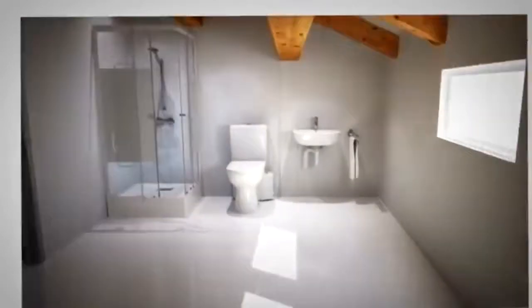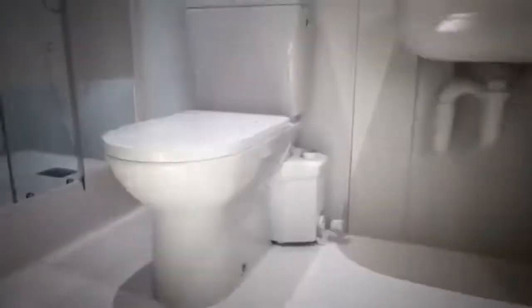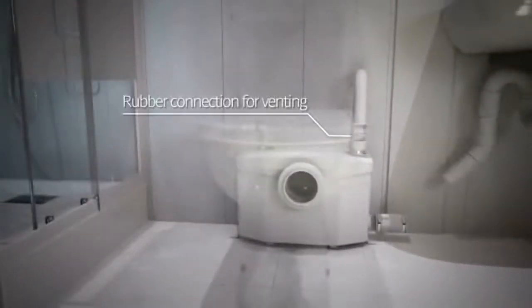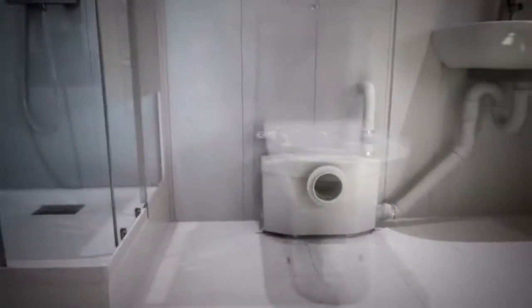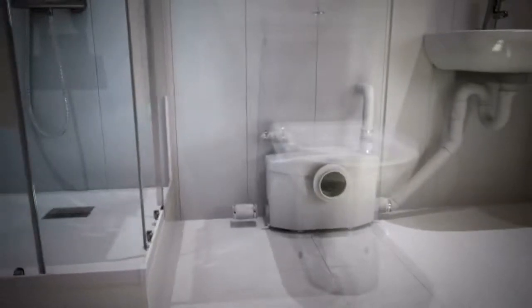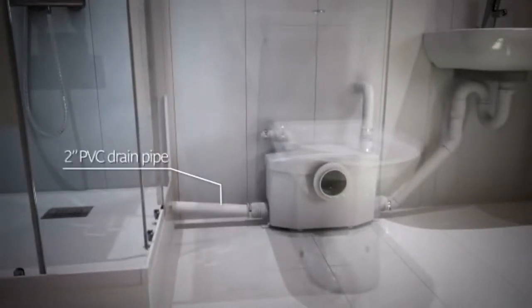The concept is simple. Our macerators are easy to install. Install a vent connection on the macerator using the coupling provided in the installation kit. Connect the drain pipe from the sink to the lower 2-inch inlet on one side of the macerator. Connect the drain pipe from the shower to the opposite side inlet.